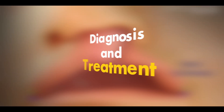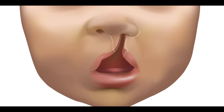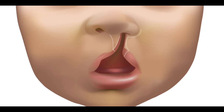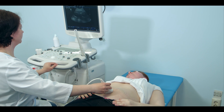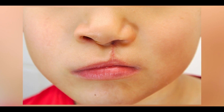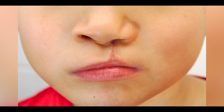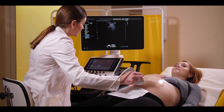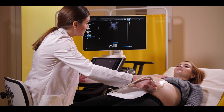Diagnosis and Treatment: Mostly, cleft lips and palate abnormality is diagnosed during fetus development or at the time of birth. However, in some cases, the cleft may be so small that it is difficult to detect at the time of birth. Such clefts are diagnosed later in life.